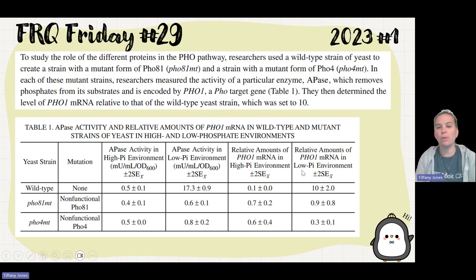To study the role of different proteins in the PHO pathway, researchers used a wild-type strain of yeast to create a strain with a mutant form of PHO81 and a strain with a mutant form of PHO4. In each of these mutant strains, researchers measured the activity of a particular enzyme, APase, which removes phosphates from its substrates and is encoded by PHO1, a PHO target gene. They then determined the level of PHO1 mRNA relative to that of the wild-type strain yeast set to 10. So here we're seeing this data that we're going to use in later parts of the question.